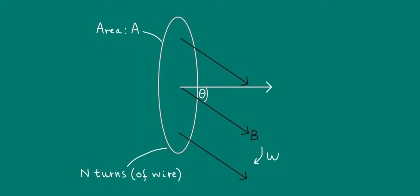If we say that at the start, t equals zero, the field lines are parallel to the normal, so that theta is equal to zero, then at time t, the angle is simply given by omega t. Hopefully you should be familiar with this from circular motion.